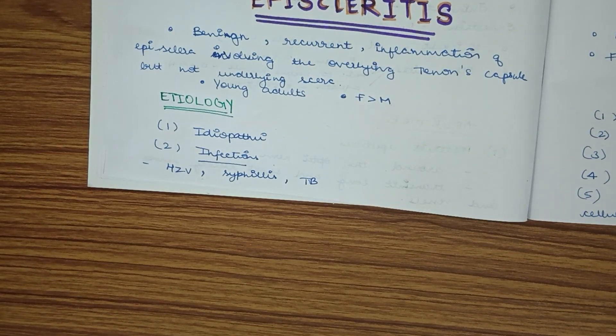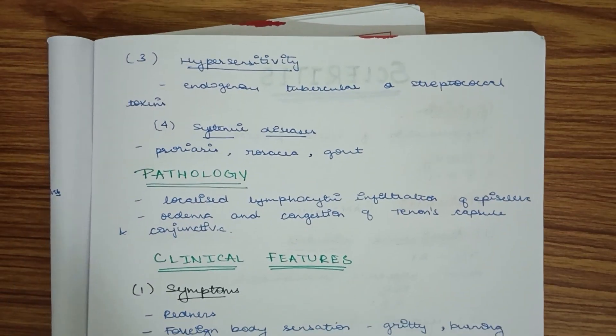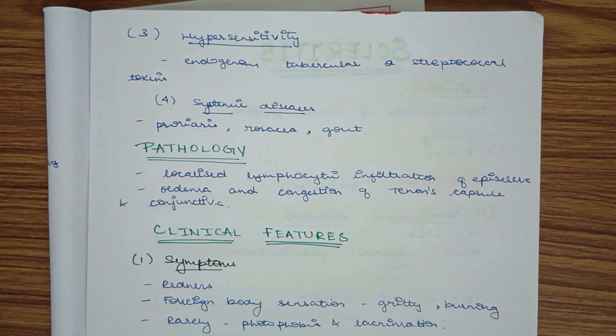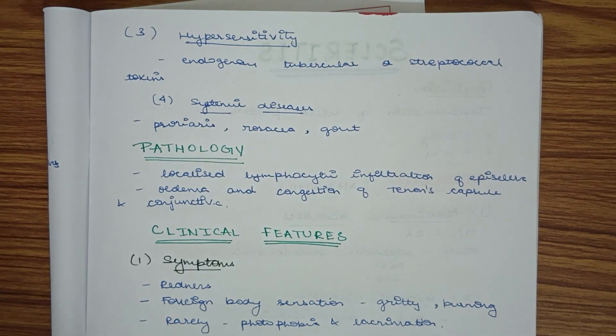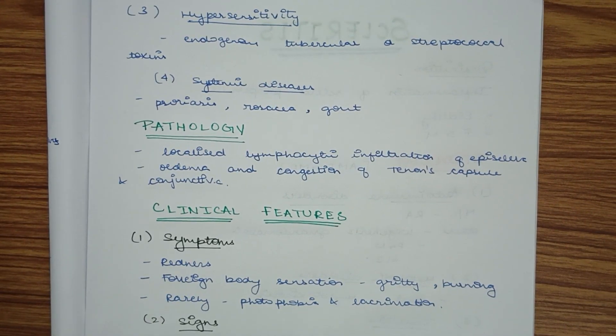Infections include syphilis, tuberculosis, and herpes zoster virus. Next are hypersensitivity or allergic reactions to endogenous tubercular or streptococcal toxins. It can also be due to systemic diseases such as psoriasis, rosacea, and gout.